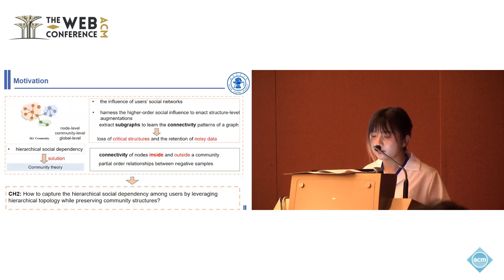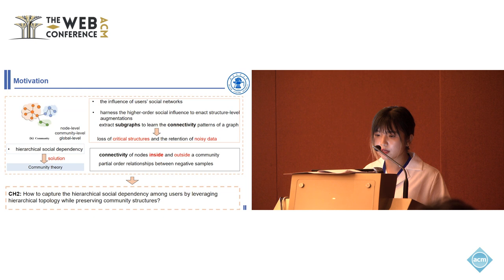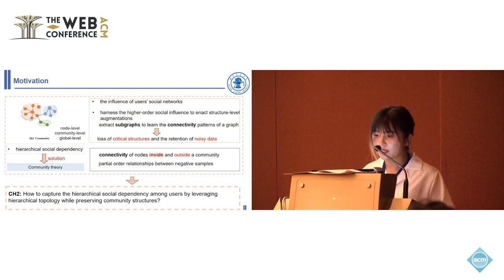Second, the influence of user social networks is critical for user modeling. It is advisable to harness high-order social influence to enact structural-level augmentations. Existing methods extract subgraphs to learn the connectivity patterns of a graph. However, this may lose critical structures and cause the loss of knowledge. Community theory provides a solution to learn hierarchical social dependency.